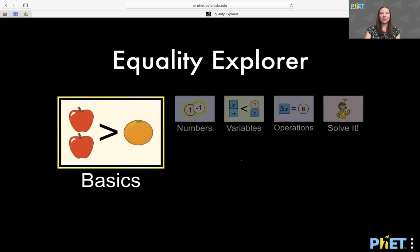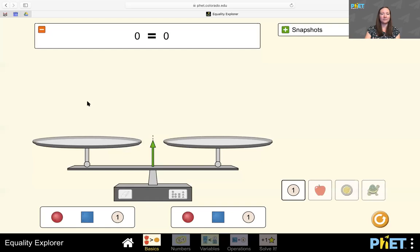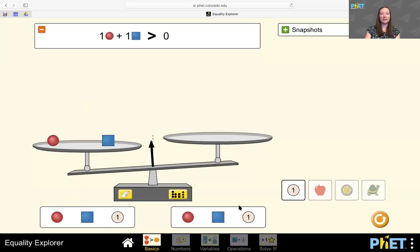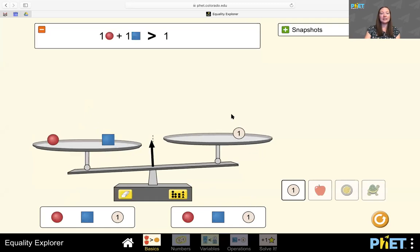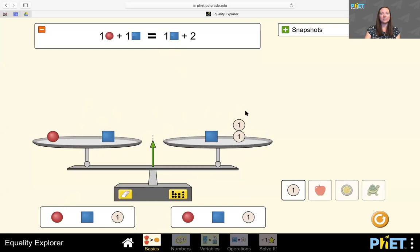This is the Equality Explorer simulation. It has five screens, and while students can begin on any screen, they usually start on the first one. So right away, I immediately just want to drag items up onto this balance. And I'm seeing that immediate feedback about the fact that the scale is unbalanced. And I have this inequality statement that's updating and is now an equation.